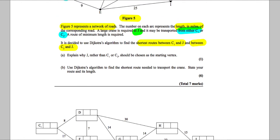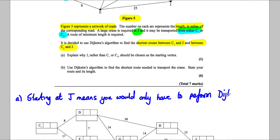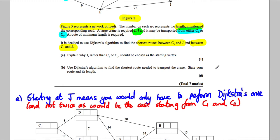For part a, we state: starting at J means you would only have to perform Dijkstra's once, not twice as would be the case starting from C1 and C2, which you'd have to do in two separate Dijkstra's algorithms. So that's nice and simple for one mark.